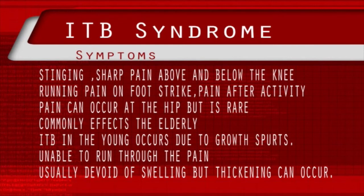Iliotibial band syndrome can also occur where the IT band connects to the hip, though this is less likely, especially in sports injury. It commonly occurs during pregnancy, as connective tissue loosens and the woman gains weight, each process adding more pressure. ITB syndrome at the hip also commonly affects the elderly, and is much less studied, so fewer treatments are generally known. This may also happen when a child or teenager's hip grows faster than the band, creating tightness over the hip and knee, and therefore producing a popping or snapping over the hip or knee.